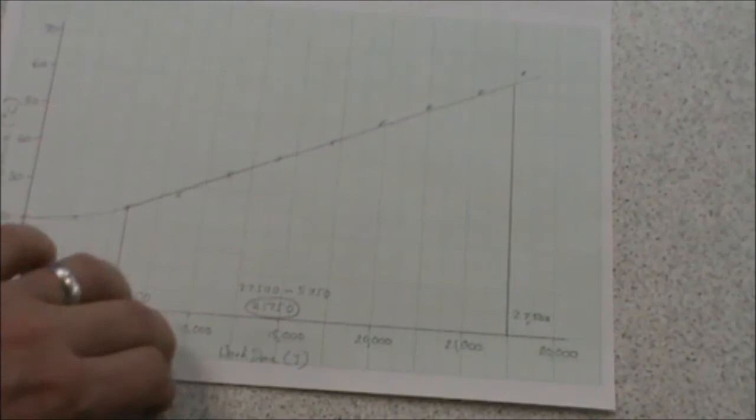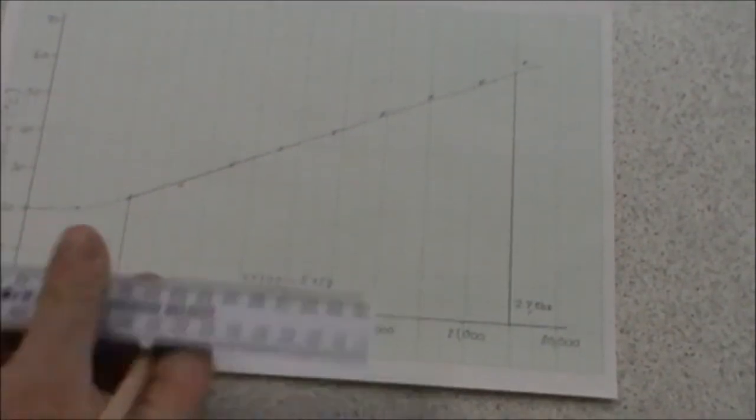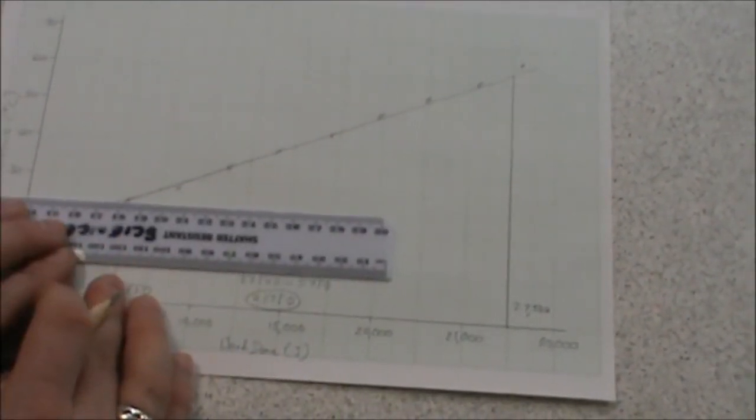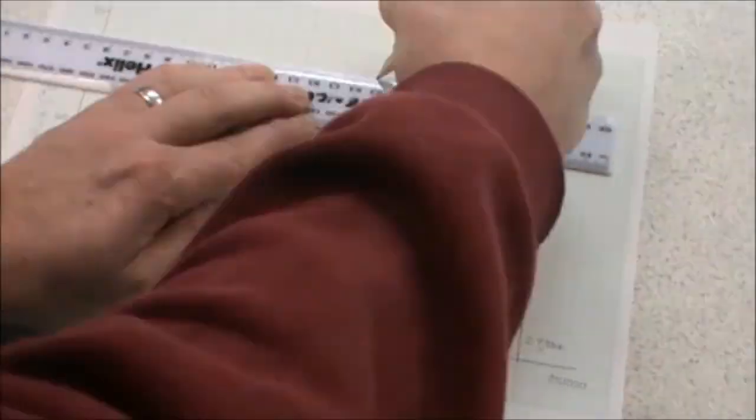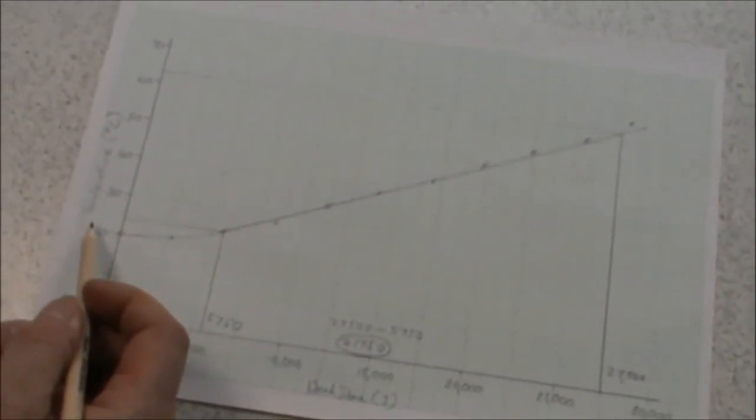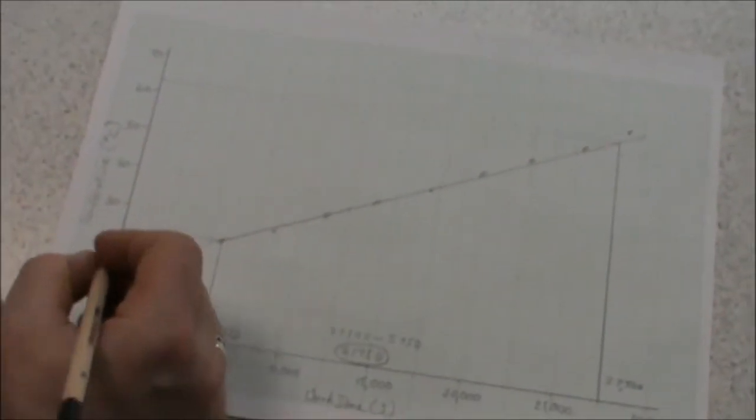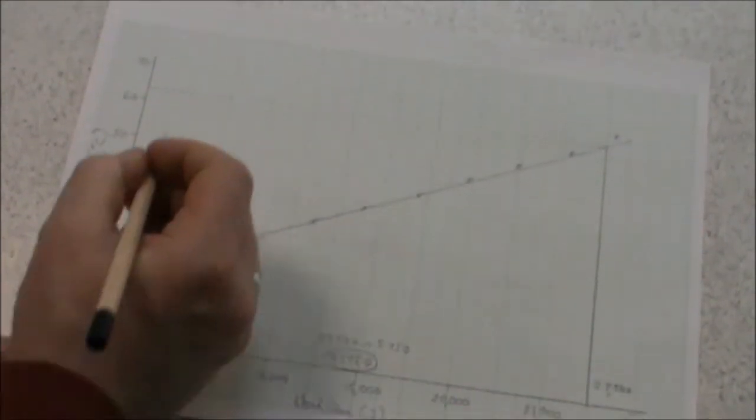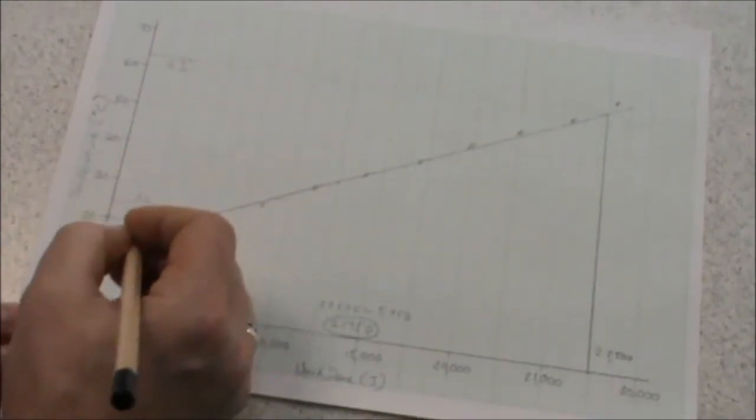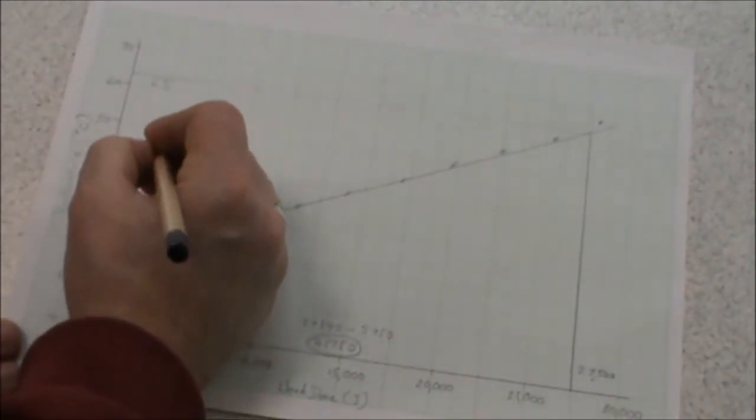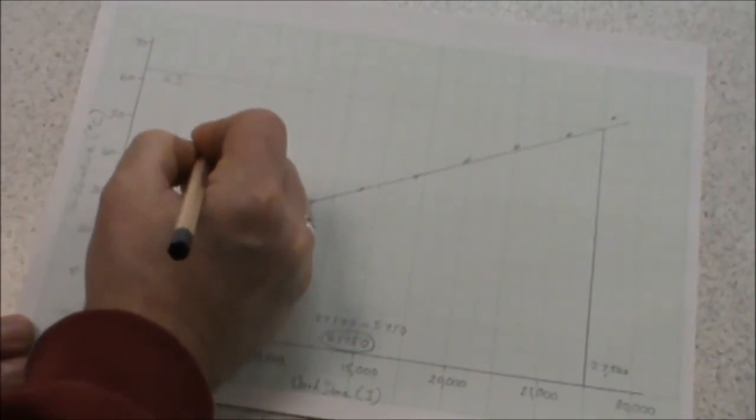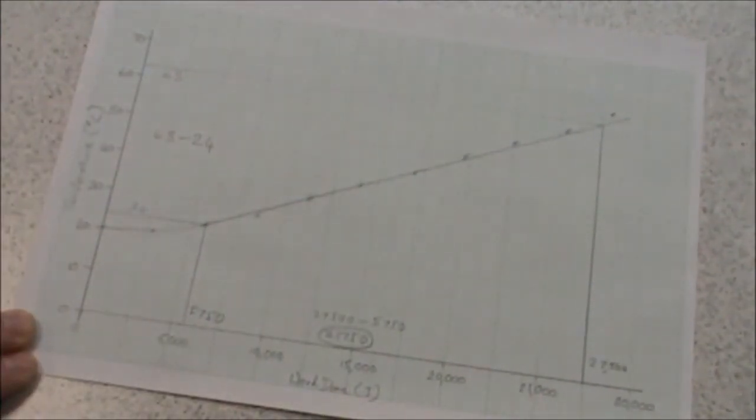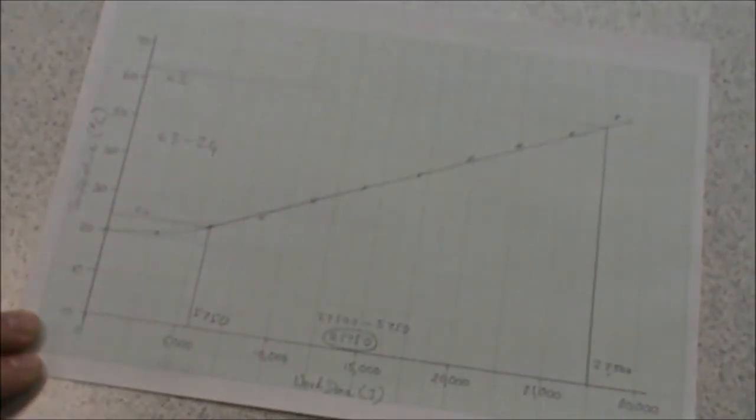That is our x-value. Our y-values we track across to the y-axis. We have a minimum value of 24 and a maximum value of 63. So our y-value is 63 minus 24, which is 39.